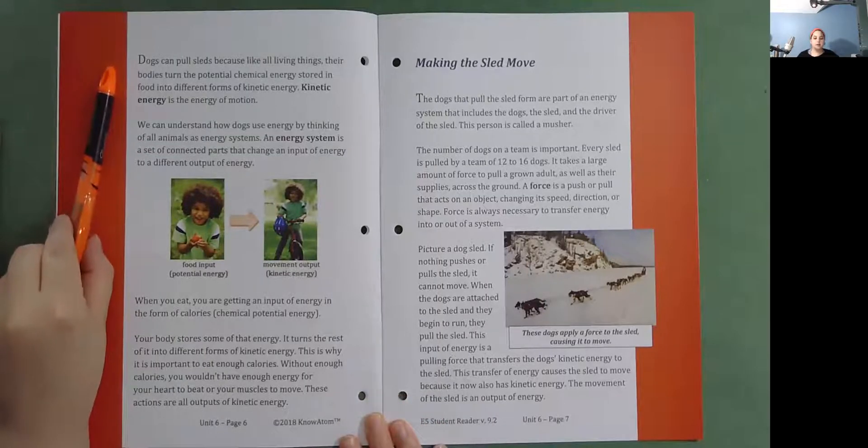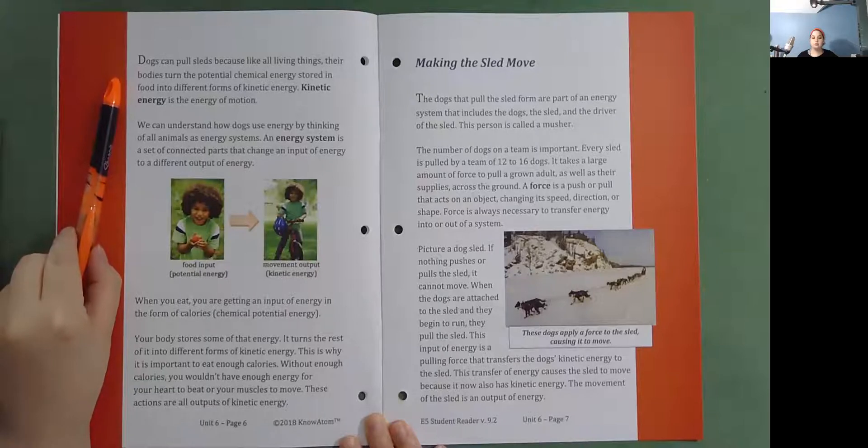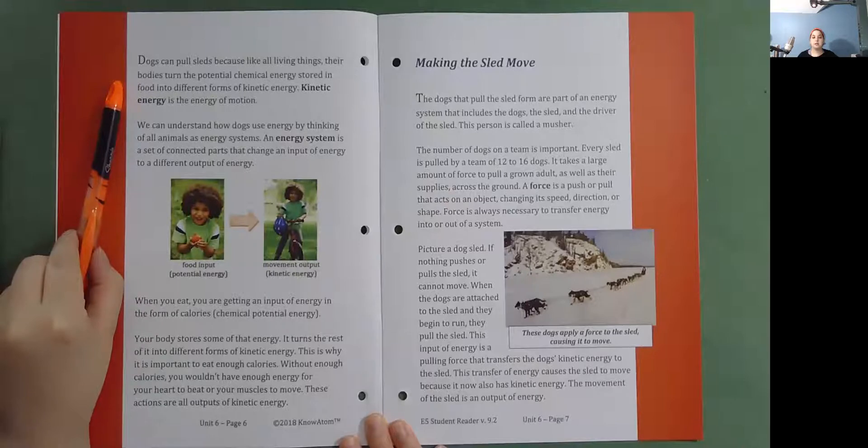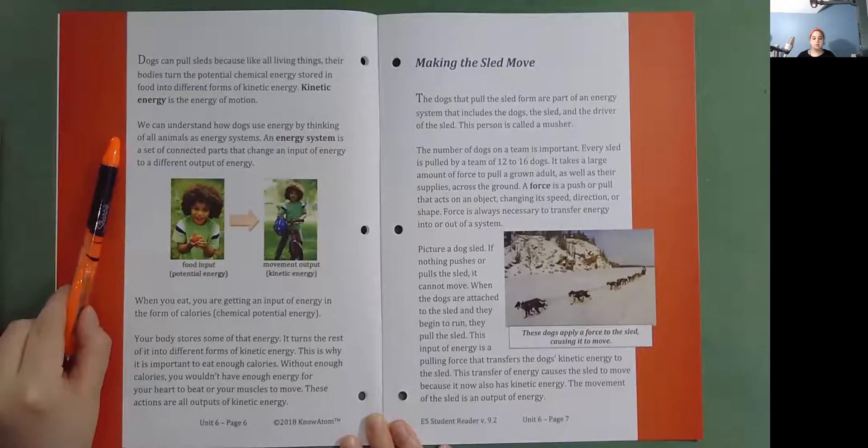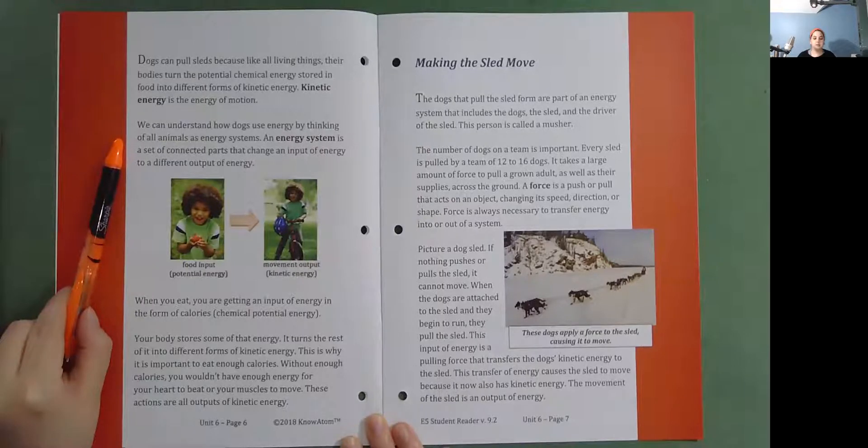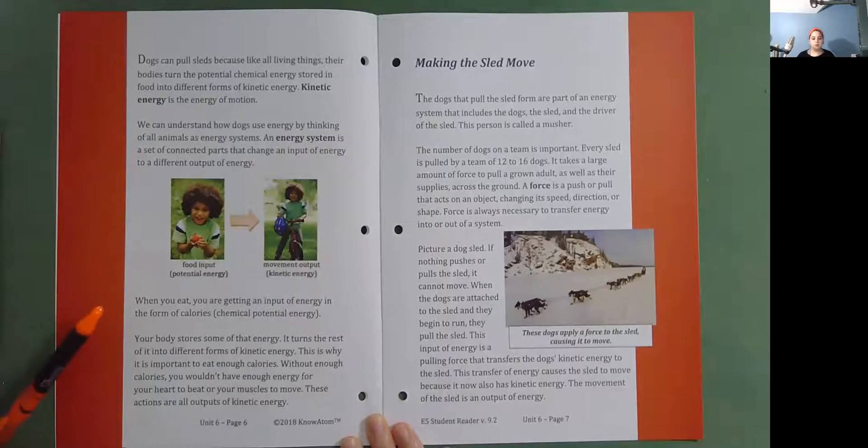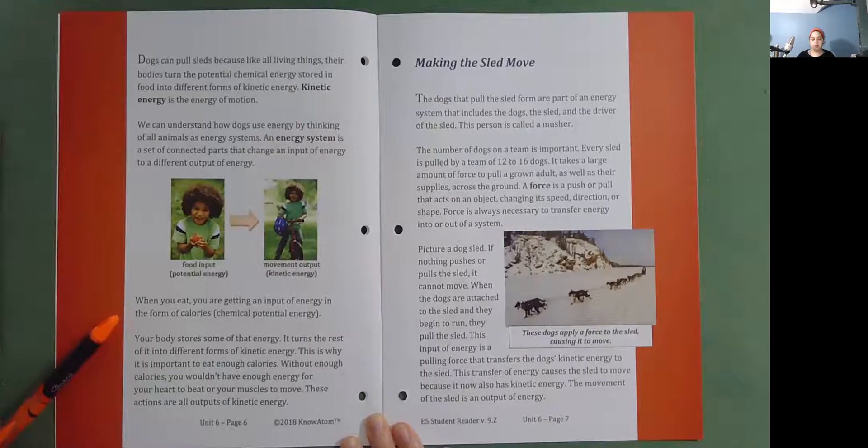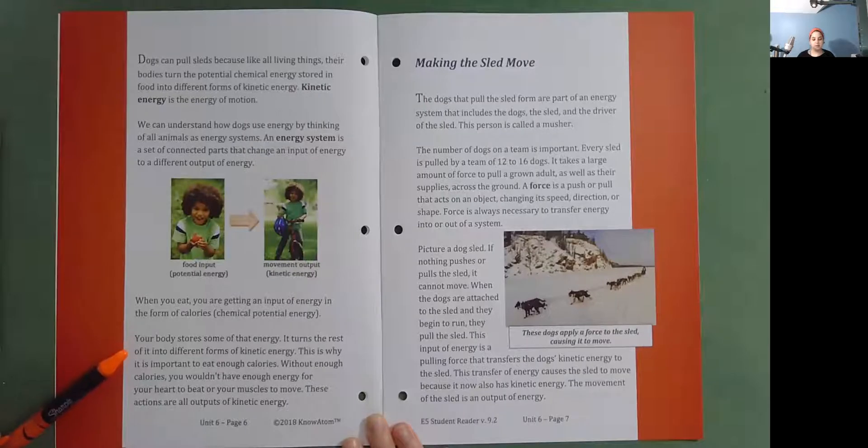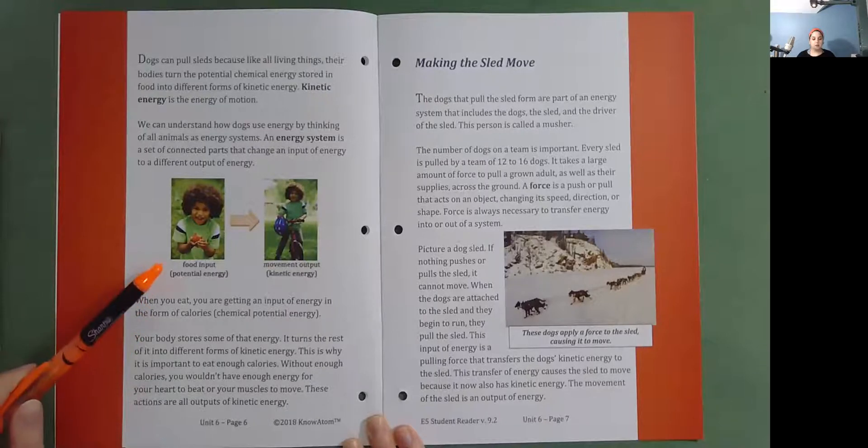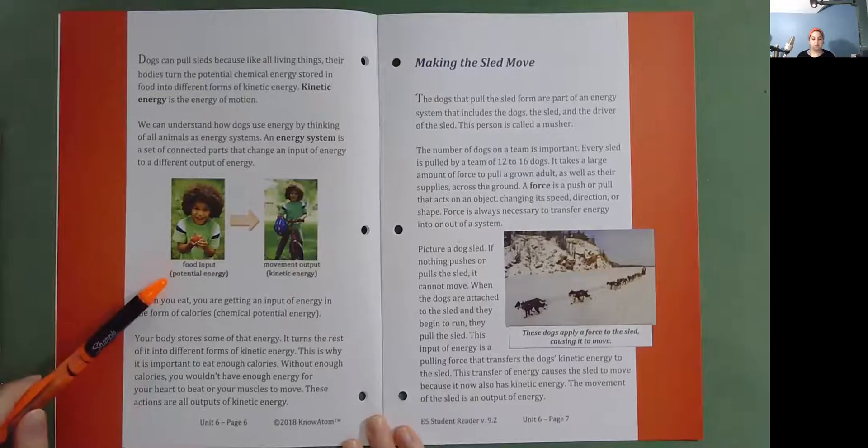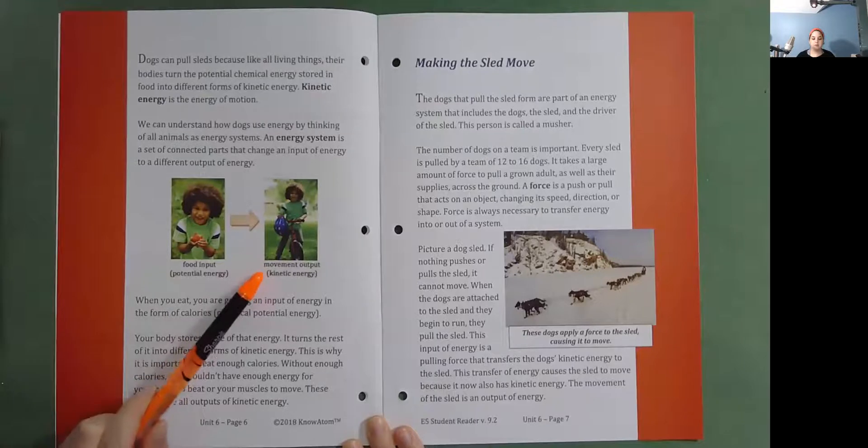Dogs can pull sleds because like all living things, their bodies turn the potential chemical energy stored in food into different forms of kinetic energy. Kinetic energy is the energy of motion. We can understand how dogs use energy by thinking of all animals as energy systems. An energy system is a set of connected parts that change an input of energy to a different output of energy. When you eat, you are getting an input of energy in the form of calories, chemical potential energy. Your body stores some of that energy. It turns the rest of it into different forms of kinetic energy. This is why it's important to eat enough calories. Without enough calories, you wouldn't have enough energy for your heart to beat or your muscles to move. These actions are all outputs of kinetic energy. Here we see somebody eating, so that's food input or potential energy. And now the movement output, it's kinetic energy.